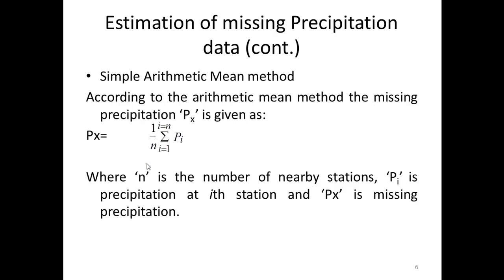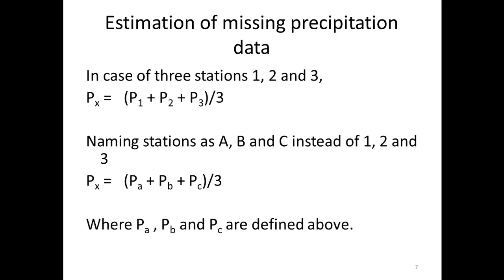In the first method, the arithmetic mean method, in order to calculate the missing precipitation Px, the equation is: Px = (1/n) * summation from i=1 to n of Pi. Here n is the number of nearby stations, Pi is the precipitation at the ith station, and Px is the missing precipitation. For example, if you have three stations 1, 2 and 3, the equation will become Px = (P1 + P2 + P3) / 3.